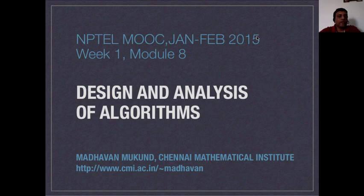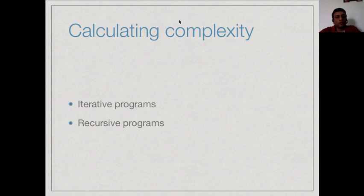For the last lecture in this unit, we are going to look at some examples of algorithms and see how to compute their upper bounds. We will look at two basic classes of algorithms: iterative examples, which basically involve a loop, and recursive examples, where you have to solve a smaller problem before you can solve the larger problem by recursively applying the same algorithm to a smaller input.